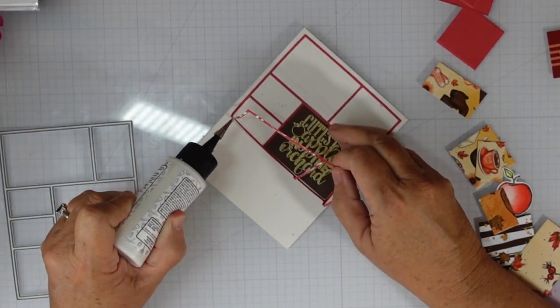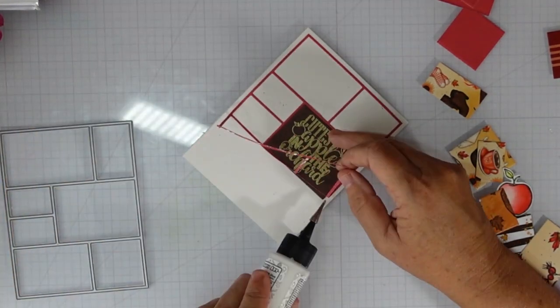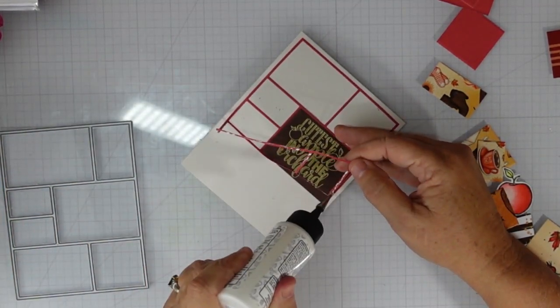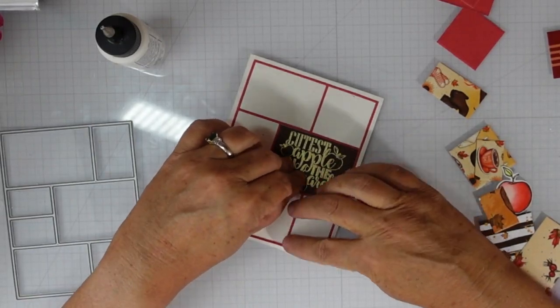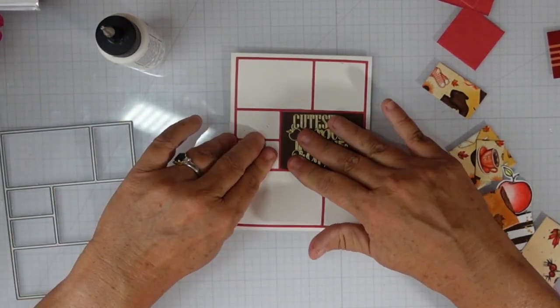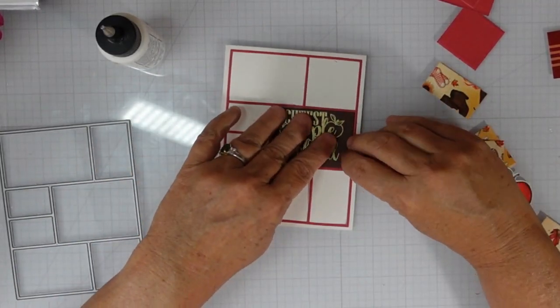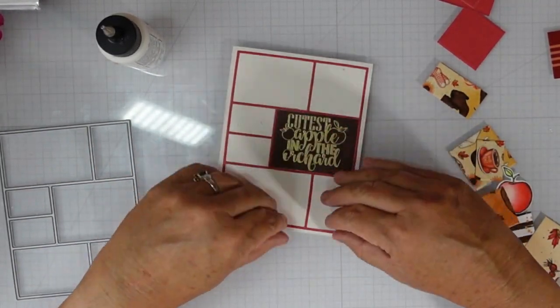I added an extra layer of the brown cardstock just to give this a little bit of dimension, just to give the sentiment a little dimension. Then I'll use my glue, which is Art Glitter Glue, to glue this down and I'm going to form it to fit that rectangle.